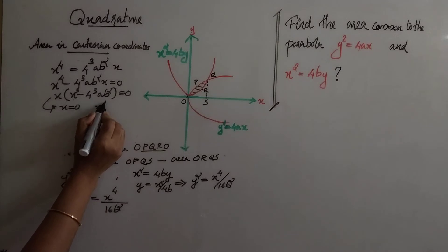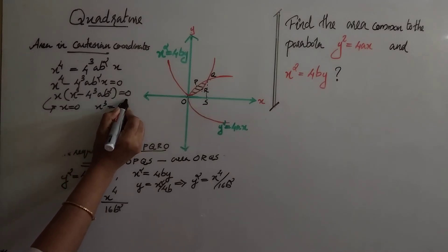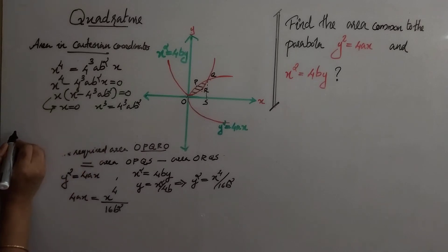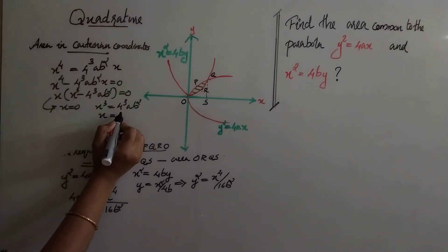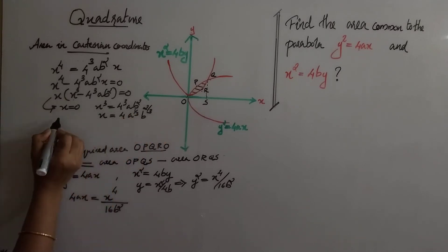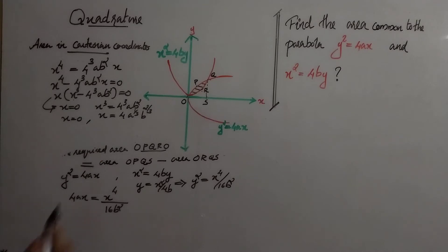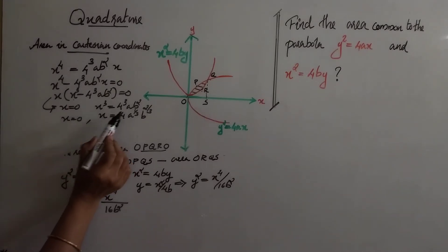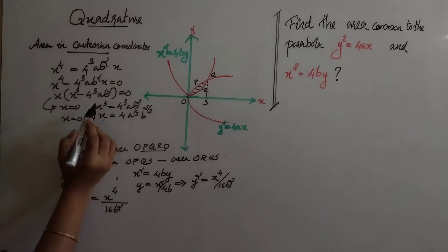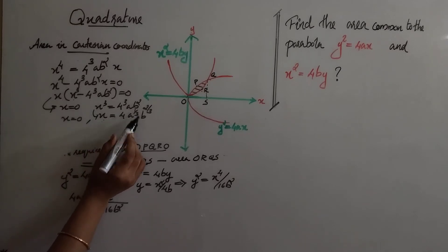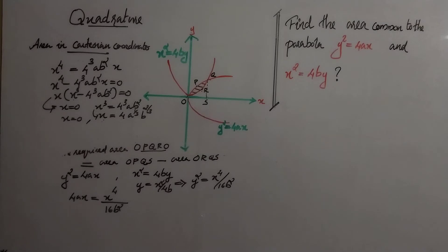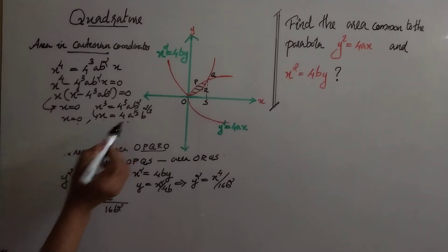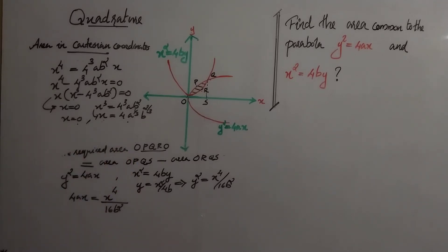From this, either x = 0 or x³ = 4³·ab², giving x = 4·a^(1/3)·b^(2/3). Hence the abscissas corresponding to the common points are x = 0 and x = 4a^(1/3)·b^(2/3).